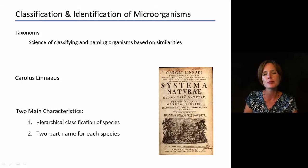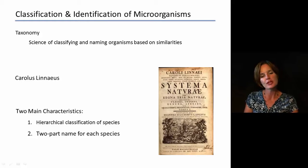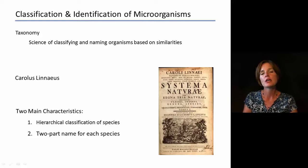There are two main guiding principles that are applied when we're using taxonomy. The first one is that there is going to be a hierarchical classification of species, so basically a layered classification of species. And then we're going to follow this up with a two-part name or a binomial name for each organism.